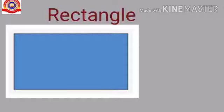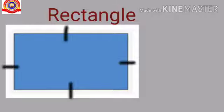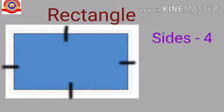Next one: rectangle. How many sides are there in a rectangle? One, two, three, four. So, a rectangle has four sides.